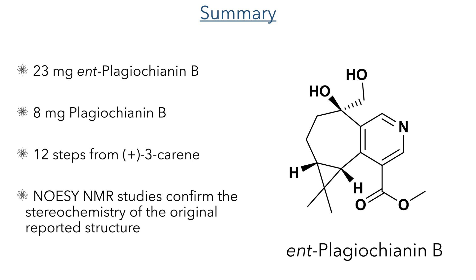That completes the synthesis. In total, 23 mg of ent-Plagiocyanin B and 8 mg of Plagiocyanin B were synthesised. This was completed in 12 steps from carene, and anisotropy NMR studies confirmed that the stereochemistry of the originally reported structure is correct. Highlights of this synthesis include the electrocyclisation used to synthesise the pyridine ring and the oxidation chemistry — most notably, the differentiation between internal and external alkenes using palladium and iron-catalyzed Wacker-type oxidations.